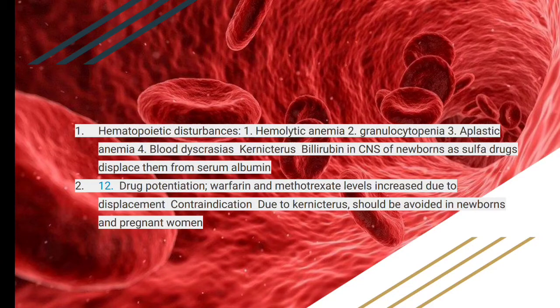Hematopoietic disturbances include hemolytic anemia, because sulfonamides inhibit DNA synthesis which ultimately affects RBCs. They can precipitate hemolytic anemia, granulocytopenia, aplastic anemia, and blood dyscrasias — that is, the breakdown of blood cells. Kernicterus — bilirubin deposition in the CNS of the newborn — is also a characteristic ADR of sulfonamides.